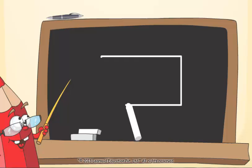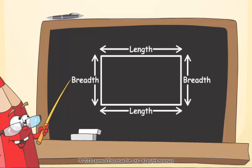Perimeter means boundary length. Rectangle has four sides. Two sides are equal. It has two lengths and two breadths.